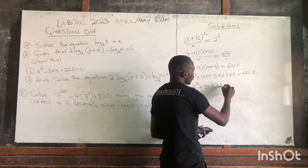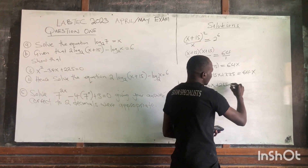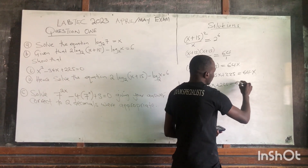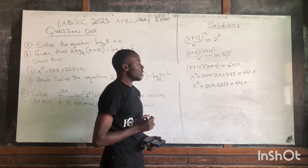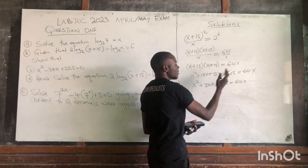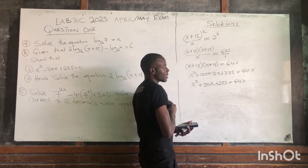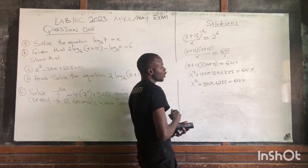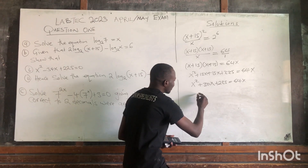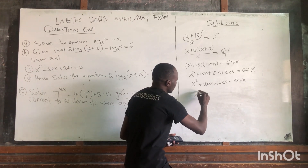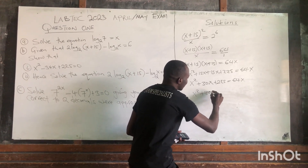plus 225, this is equal to 64x. When you reach here, this side you have 4x and this side you have 30x. These are like terms, you can put them together. So here you can get x squared plus 30x,